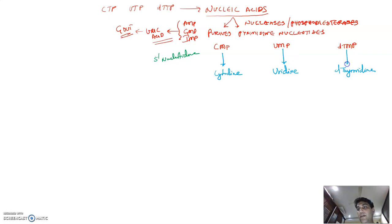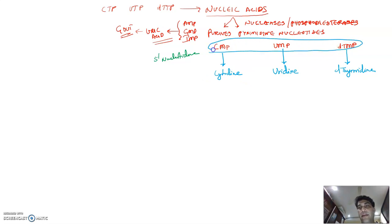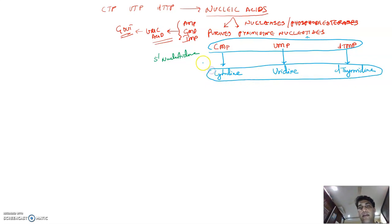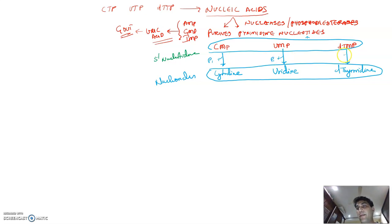So these nucleotides now become nucleosides. The 5' nucleotidase removes the phosphate group. So cytidine, uridine, and deoxythymidine are the resulting nucleosides.